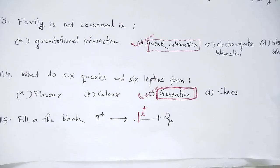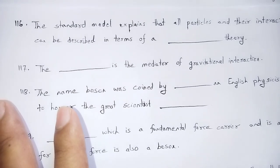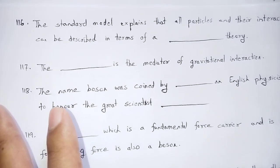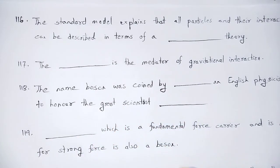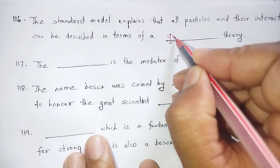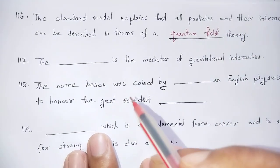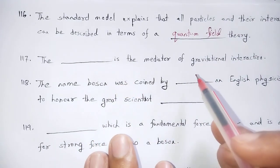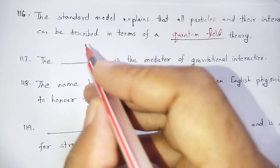Question number 116: The standard model explains that all particles and their interactions can be described in terms of quantum field theory. The mediator of gravitational interaction is the graviton.